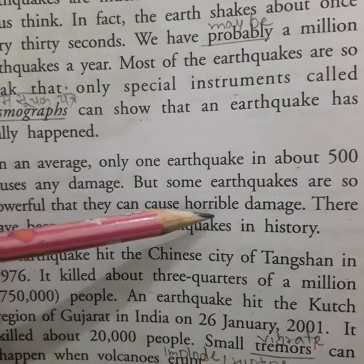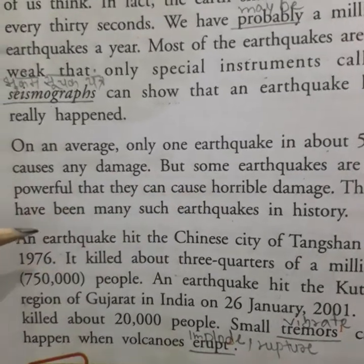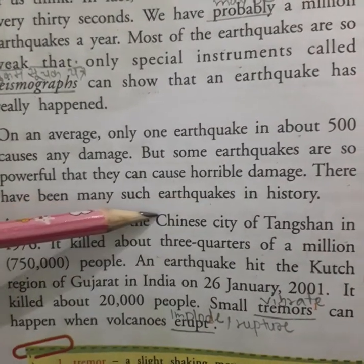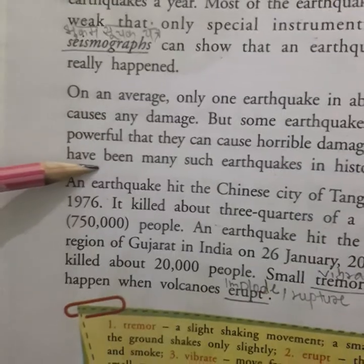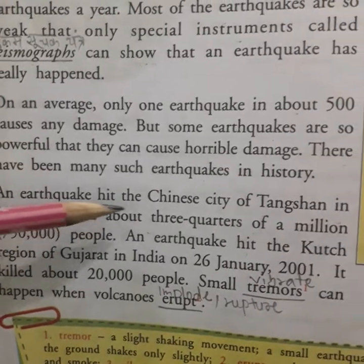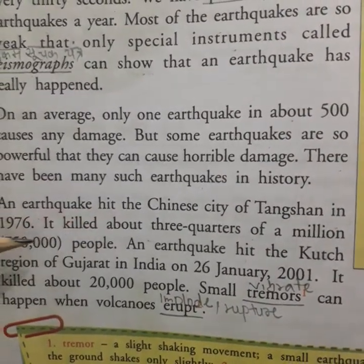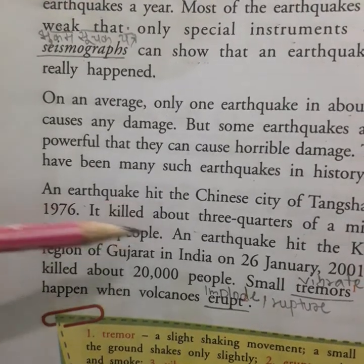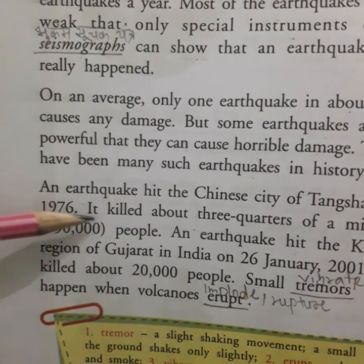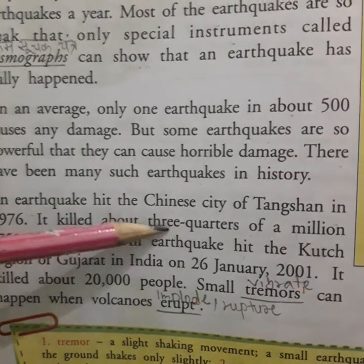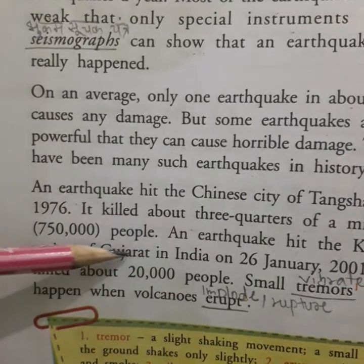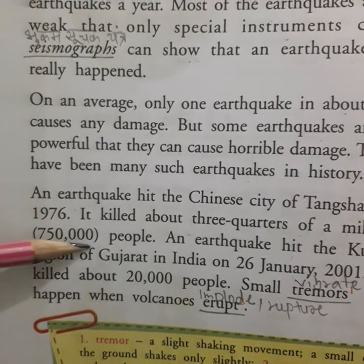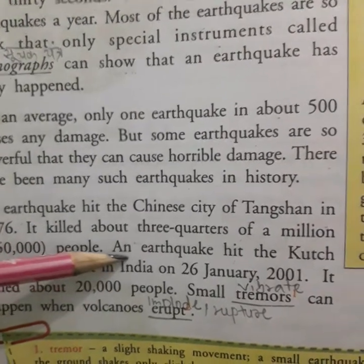There have been many devastating earthquakes in history. An earthquake hit the Chinese city of Tangshan in 1976, and it killed about three quarters of a million people — that is 7,50,000 people killed in that one earthquake.